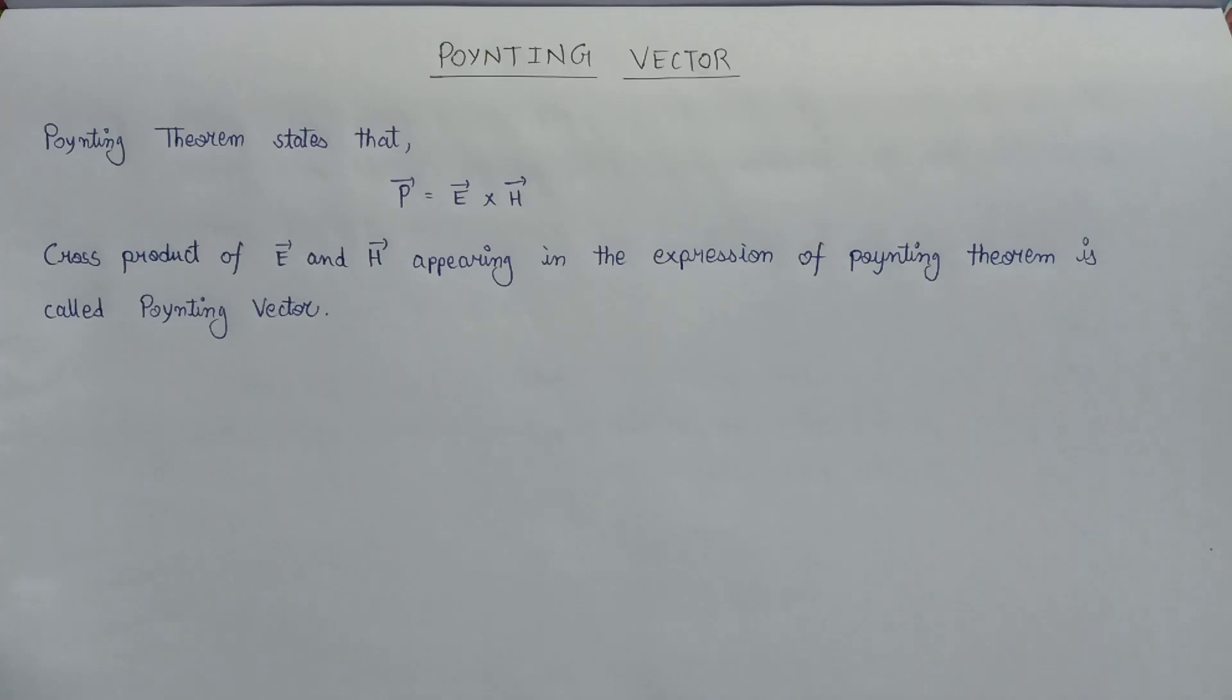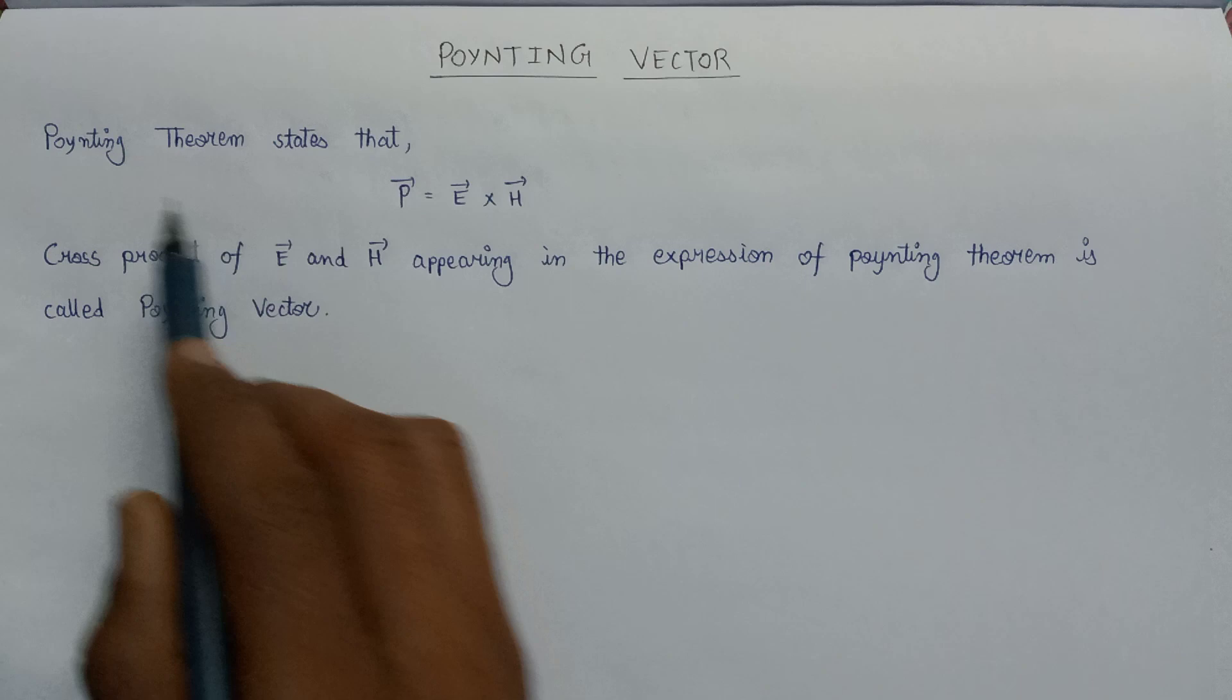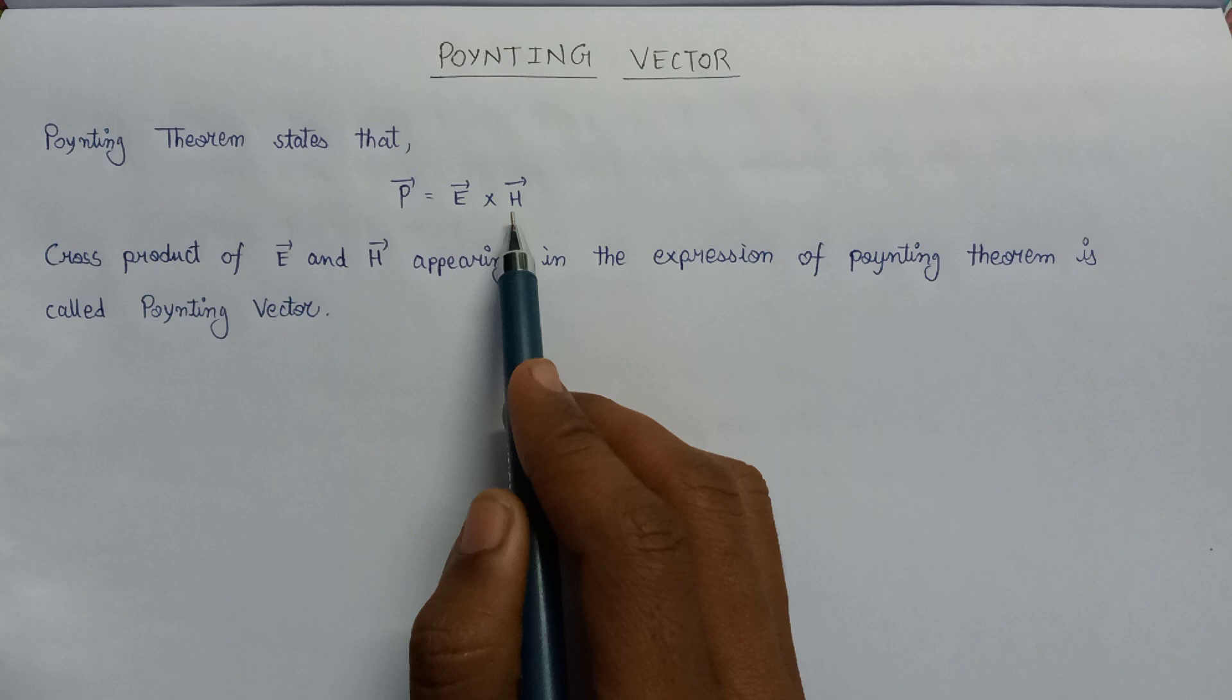Welcome all. In this lecture we are going to discuss about Poynting vector. So the Poynting theorem states that the cross product of electric field intensity and the magnetic field intensity is equals to the power flowing through it.